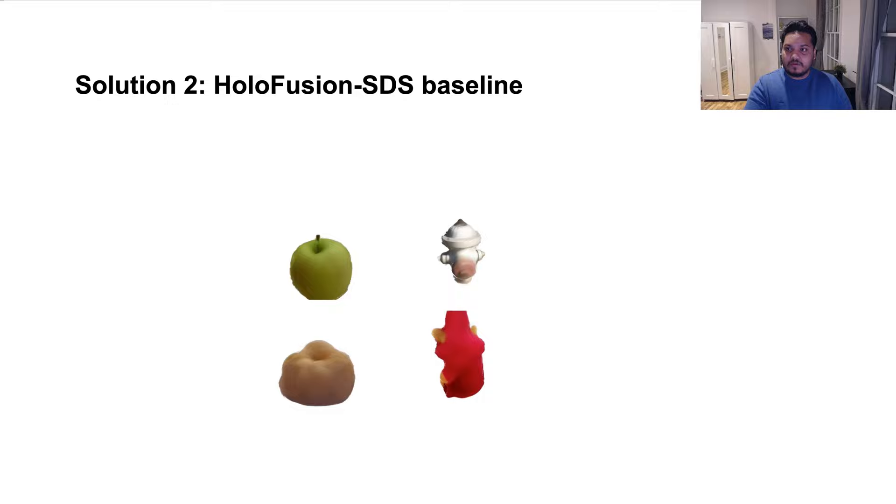We then form the HoloFusion SDS baseline which uses the score distillation sampling loss as proposed by DreamFusion to fit our high resolution feature voxel grid instead of the mean squared error. Although the flickering is greatly reduced here, the SDS loss inhibits all high frequency details and makes all the samples overly smooth and slightly off-coloured.